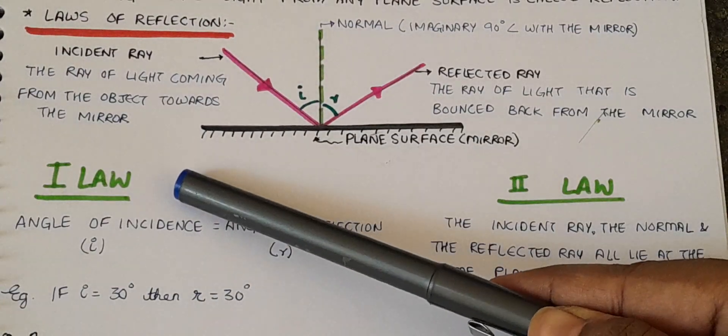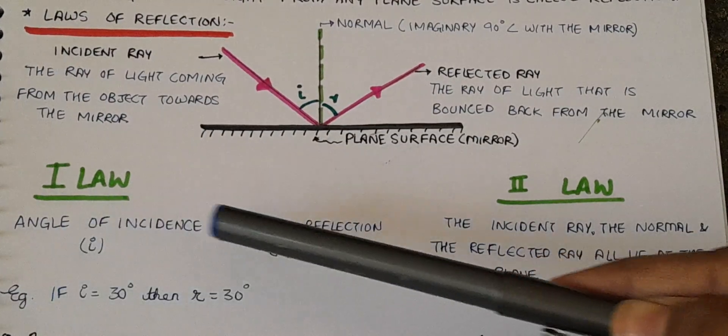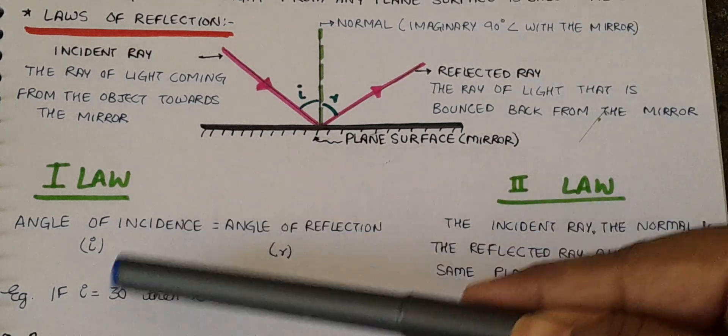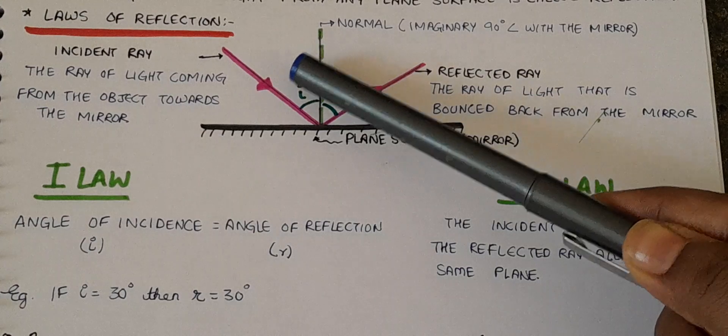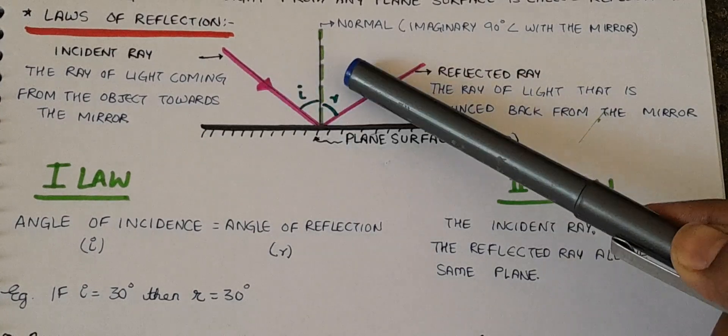The first law of reflection states that angle of incidence is equal to angle of reflection. If angle I is 30, then angle R will also be equal to 30. Yeh dono angle hamesha equal honge.